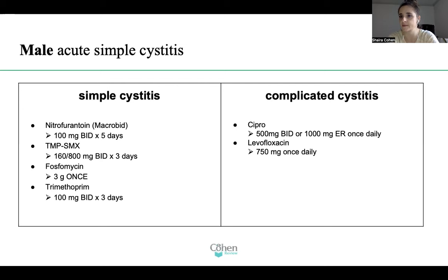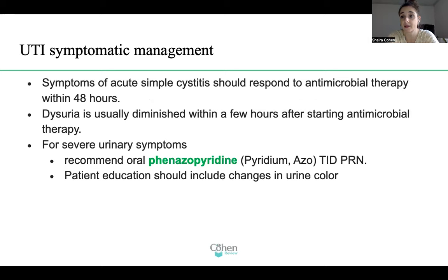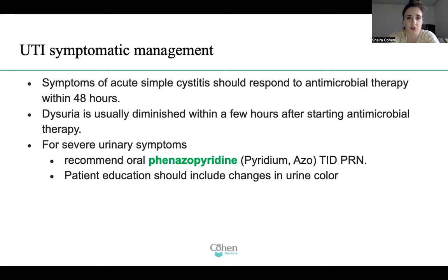Regarding symptomatic management: symptoms of acute simple cystitis should respond to antimicrobial therapy within 48 hours, and dysuria is usually diminished within a few hours of starting therapy. If an exam question describes a patient who is still symptomatic after 48 hours — say four or five days — and they report compliance with medication, then perhaps you're not treating it correctly. Perhaps the causative organism is something different; that's why cultures are so important. They usually come back in two to three days — review them and prescribe something accordingly.